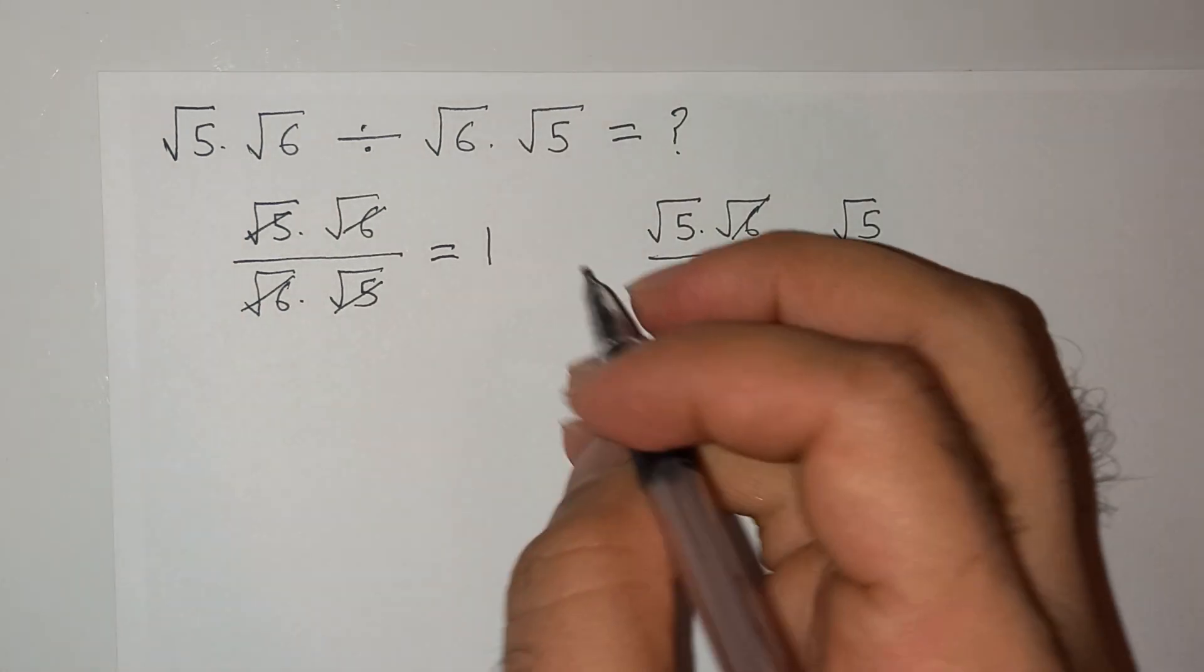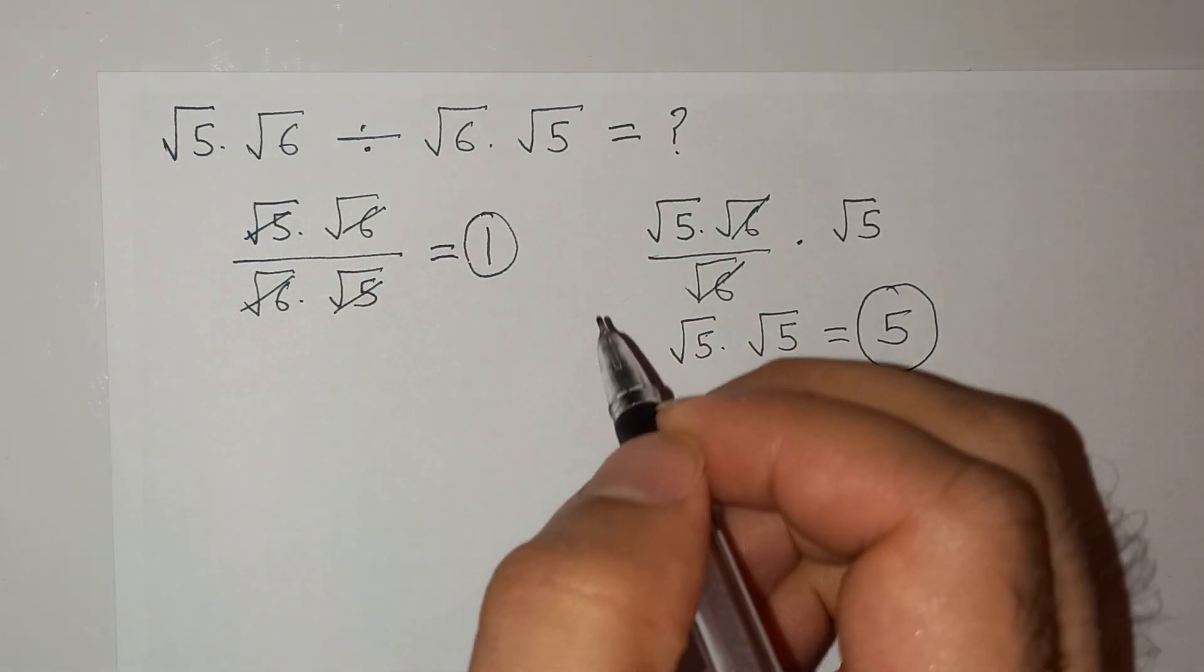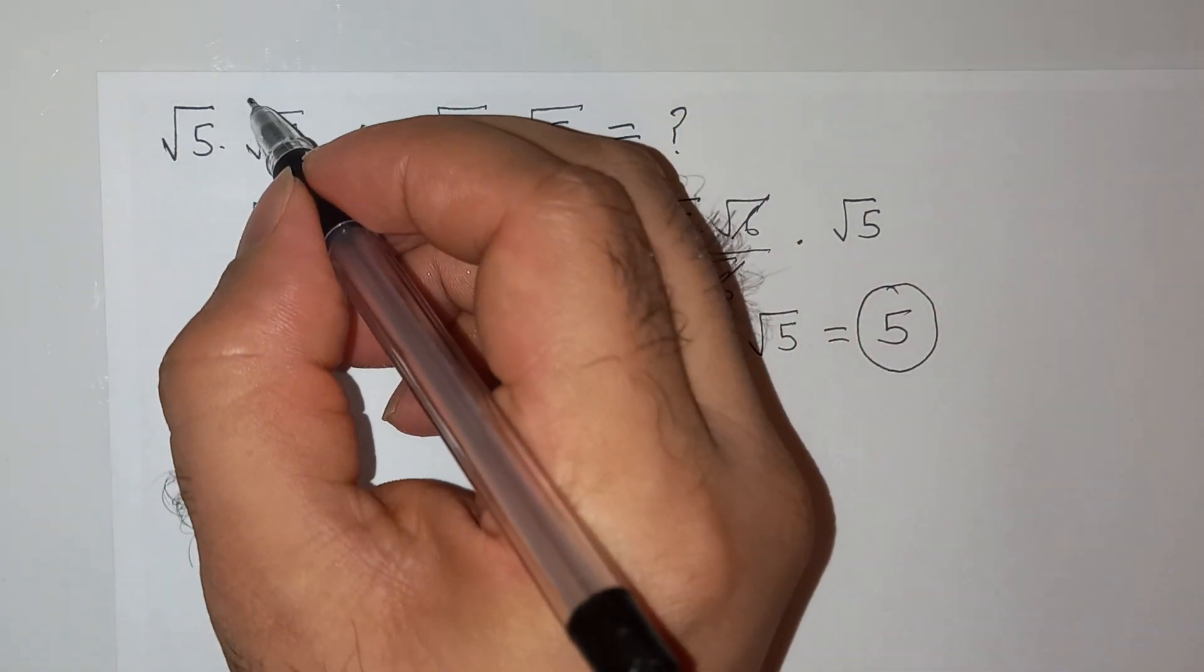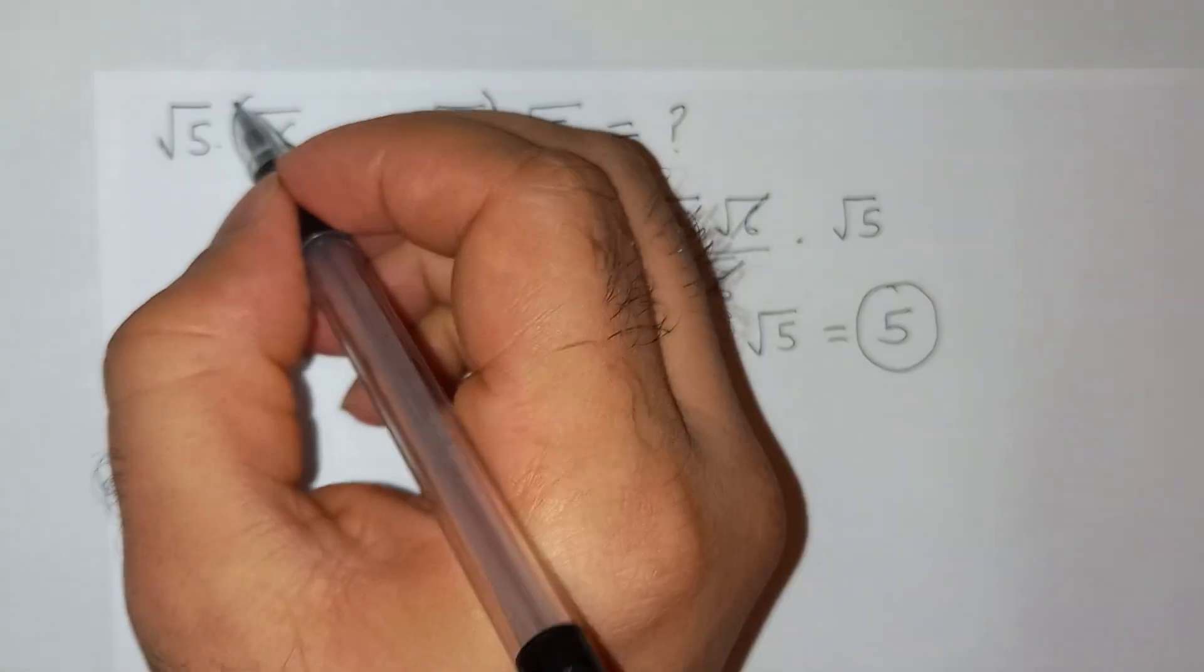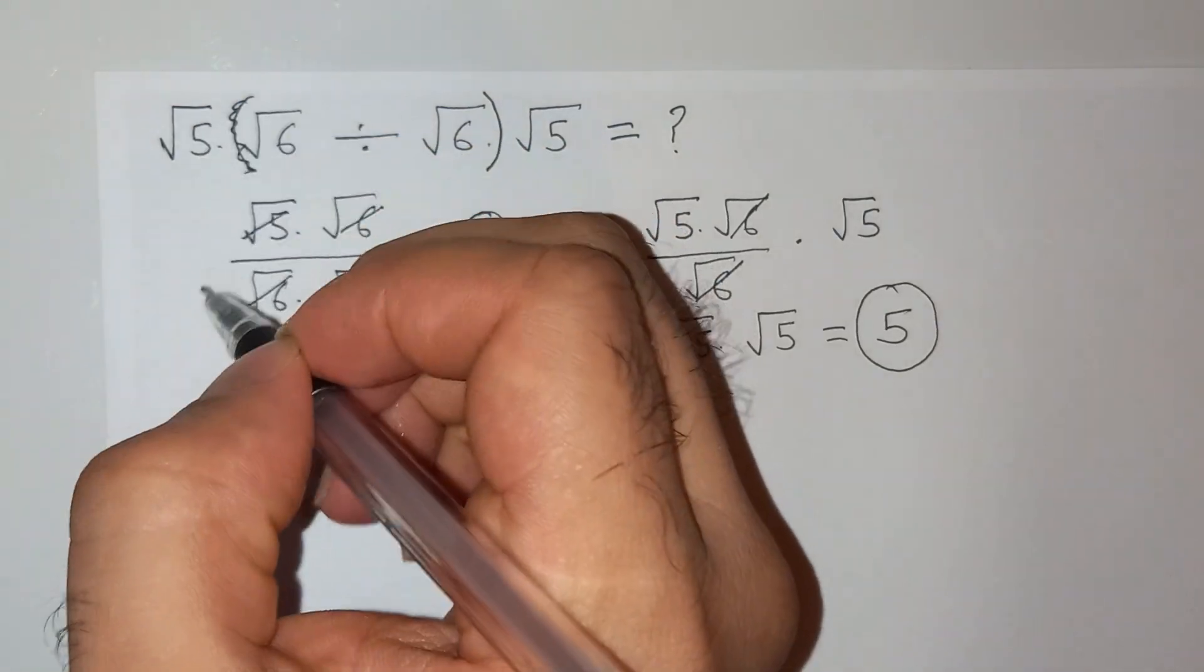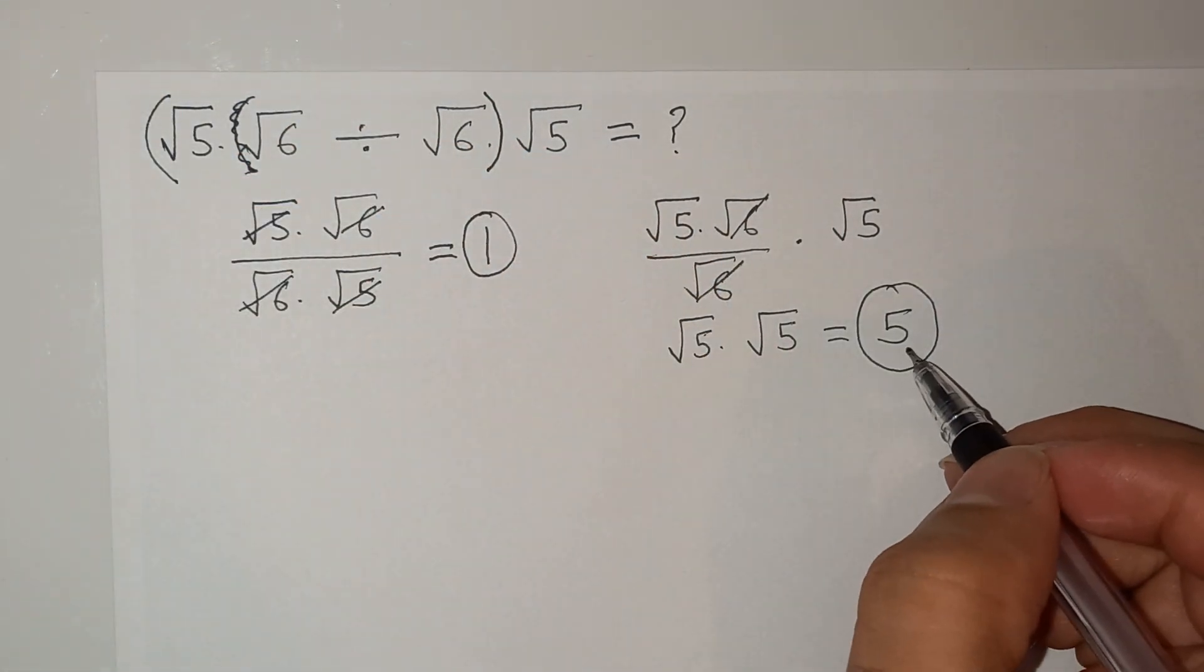So in here the answer is 5 and in here the answer is 1. The thing is if we apply the bracket here, the answer should be 5.